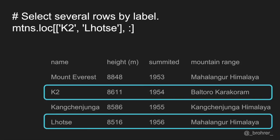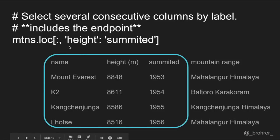We don't have to limit ourselves to a single row or column using this method. In the row position, we can pass a list of labels, which returns a set of rows rather than just one. We can also get a subset of columns by specifying the start and end column with a colon in between. For example, height:summited gives us all columns between and including height and summited. Note that this is different from numerical indexing in NumPy, where the endpoint is omitted by default. Also, because we've set the name column as the index, name will also be returned in the resulting data frame.